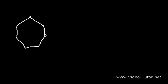Go ahead and take a minute to draw cycloheptane and cyclooctane. For cycloheptane, you can start by putting two lines — that's cycloheptane. For cyclooctane, the easiest way to draw it has eight sides — and that's how you draw cyclooctane.